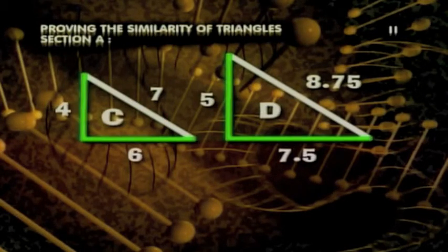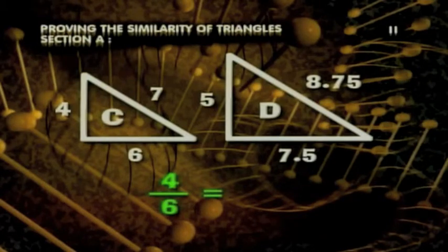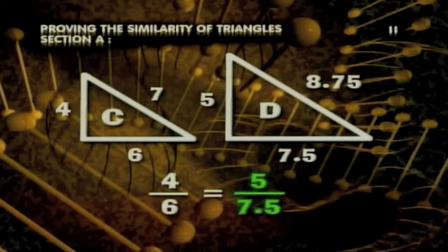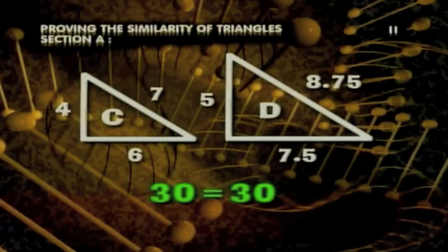We'll start with the two shorter legs. In triangle C, we have 4 over 6. We set 4 over 6 equal to triangle D's smaller sides, 5 over 7.5. We cross-multiply for 30 equals 30. So the two sides are in proportion.